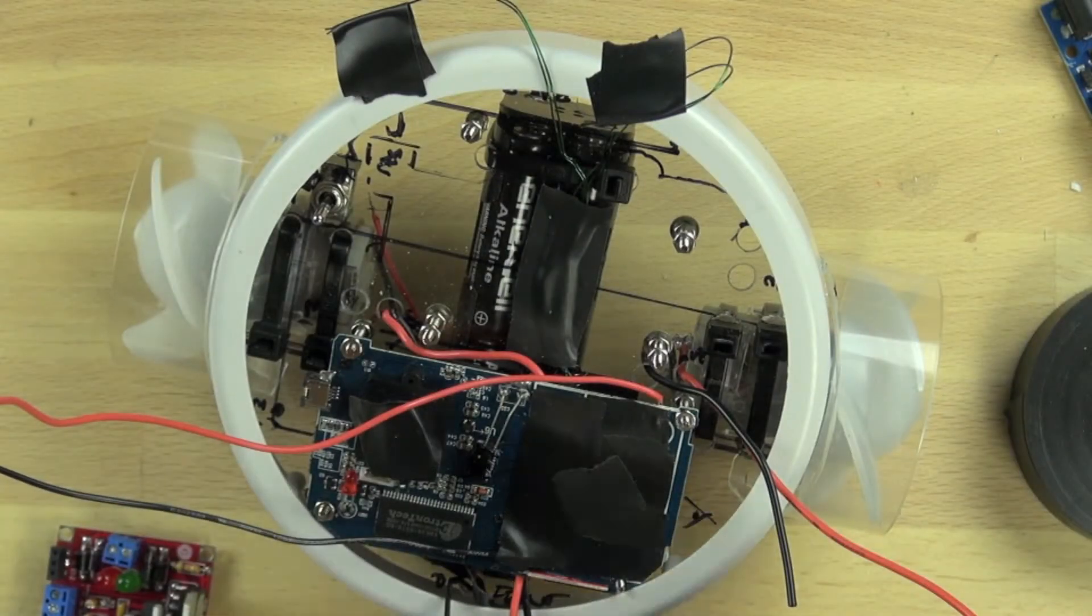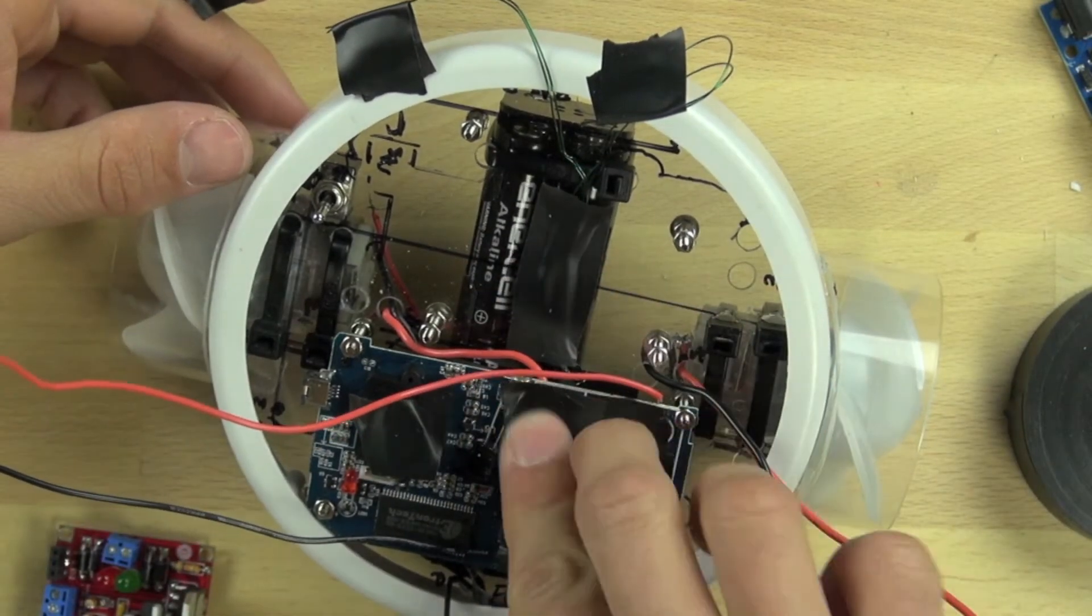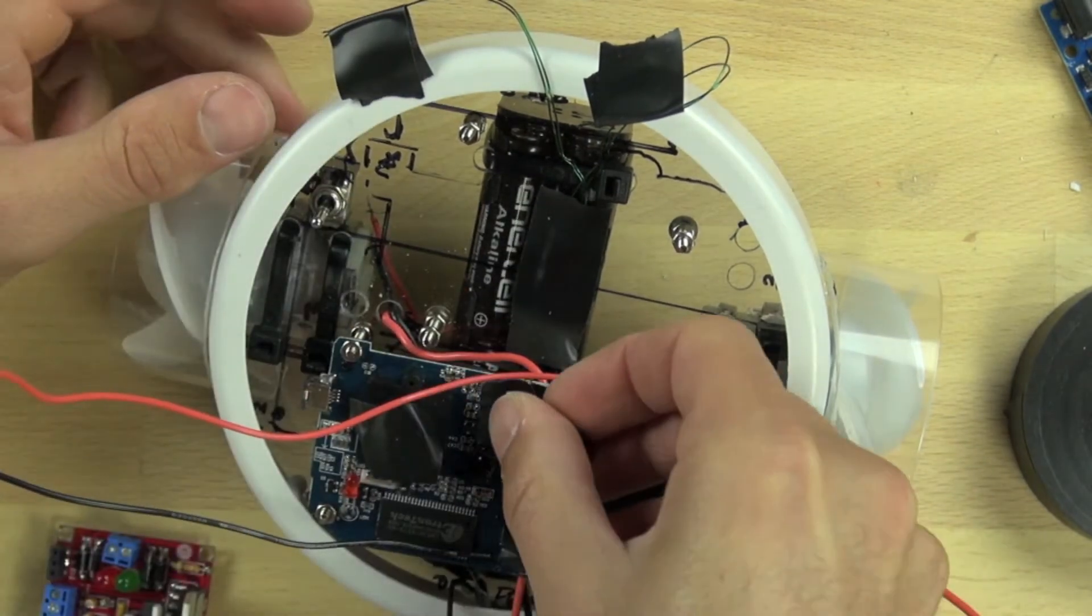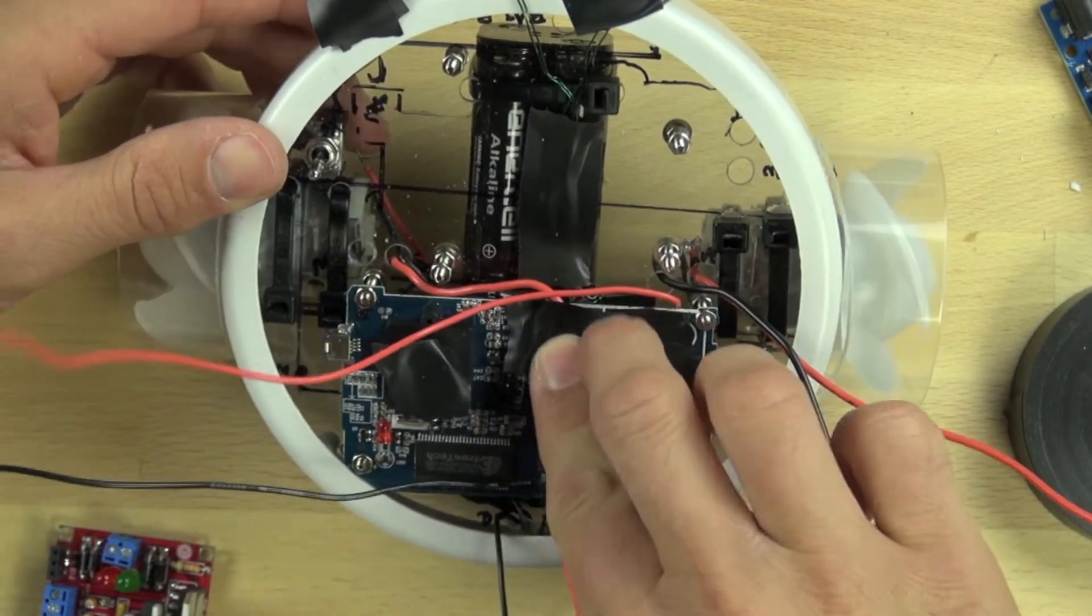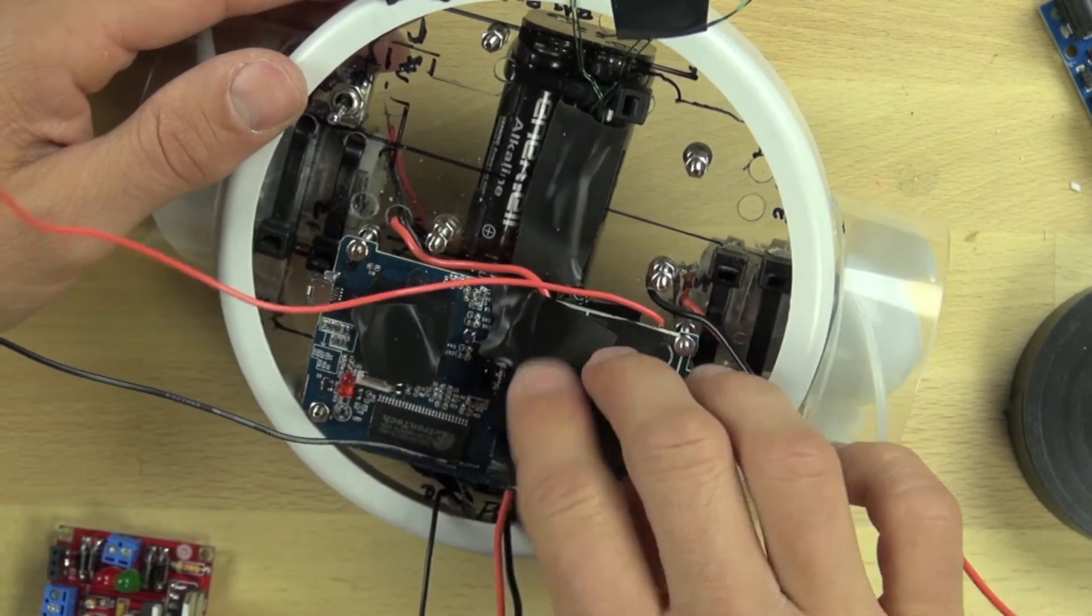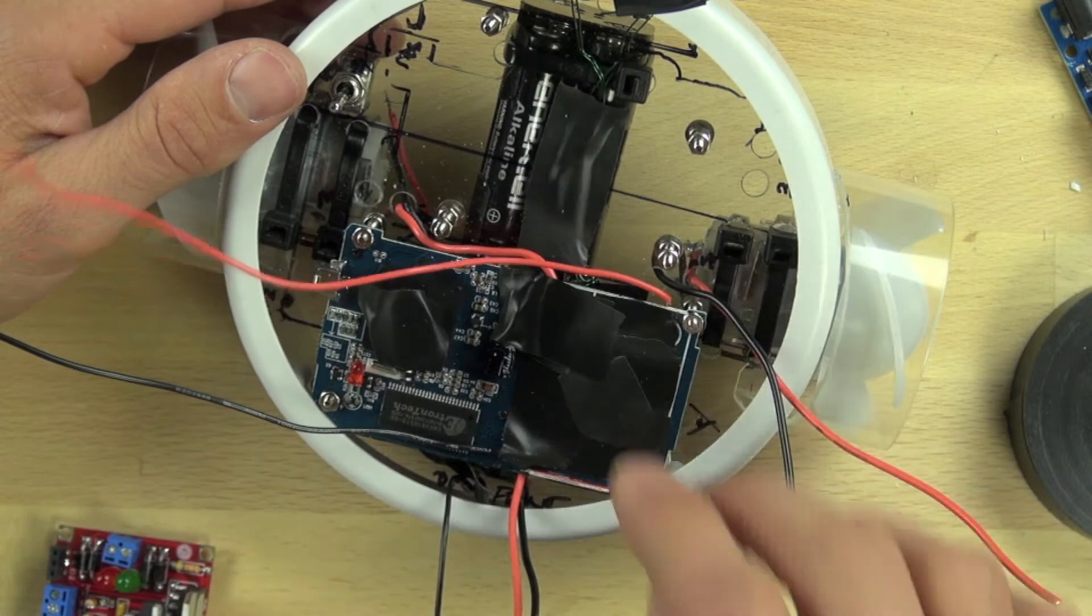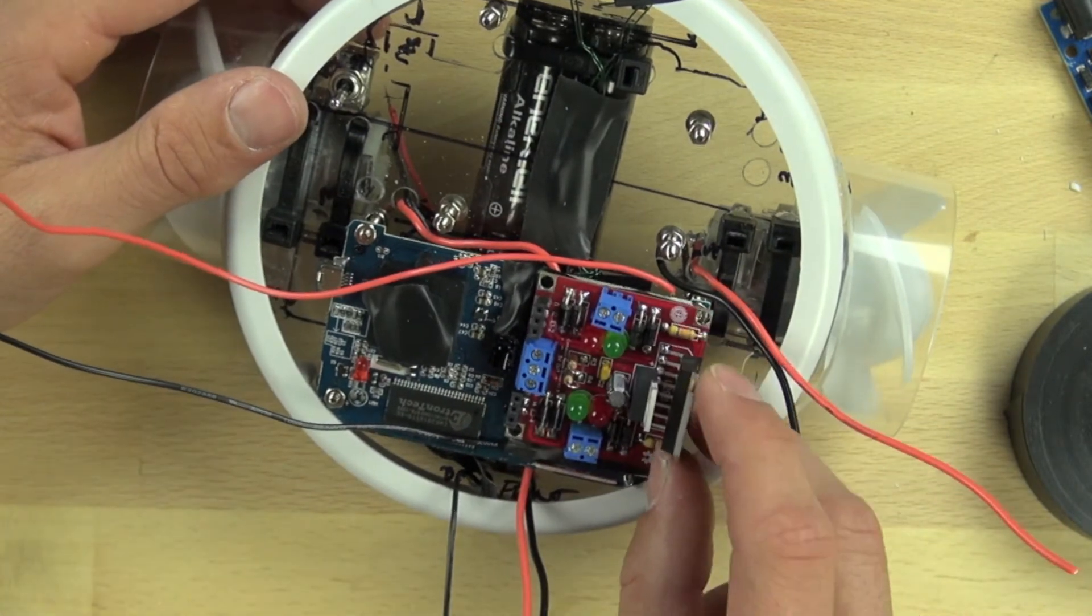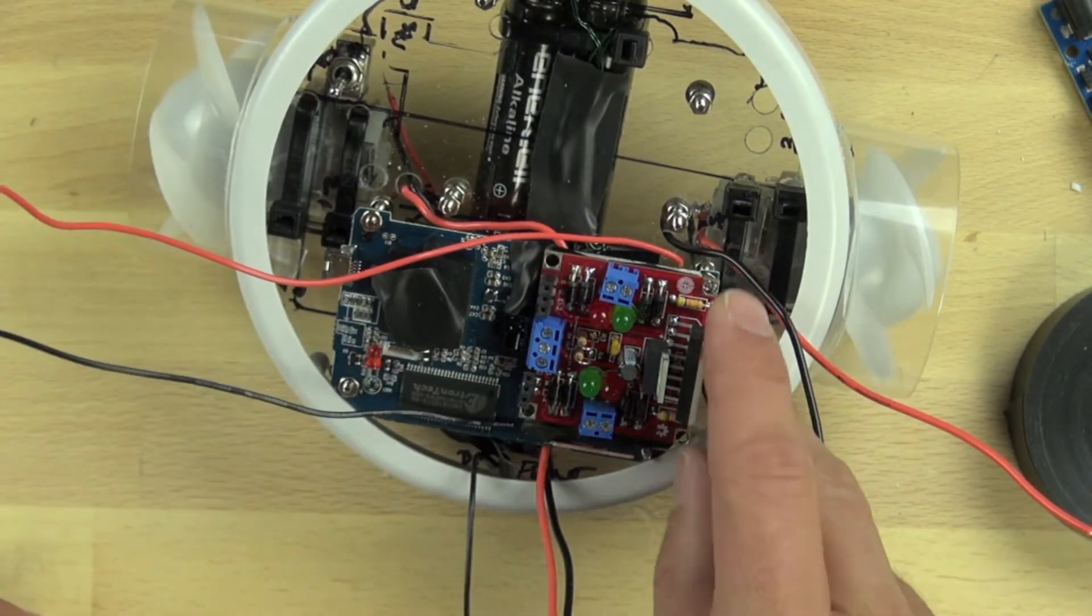Now we're going to tape over the leads on our capacitor that's on our camera there. We realize that the L298 has some leads underneath that could potentially touch it and cause a short, so we want to make sure that doesn't happen. We're just covering it over with electrical tape and double checking the position of the L298.